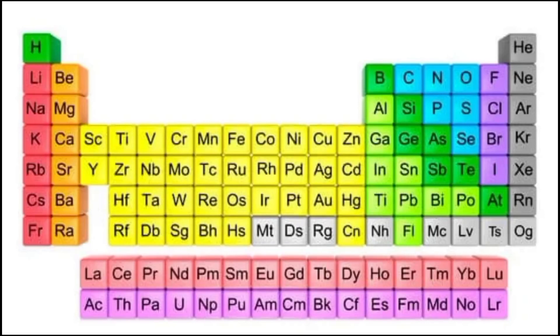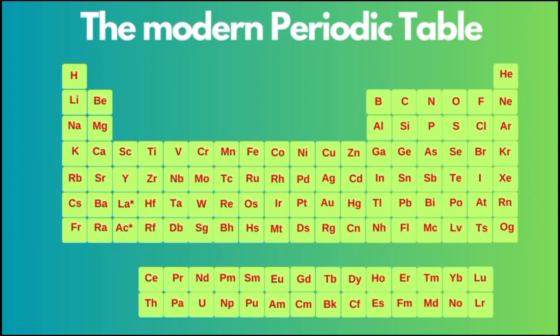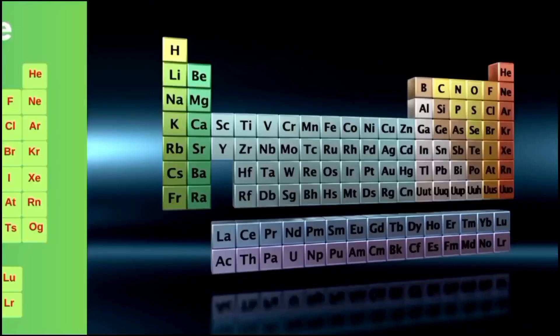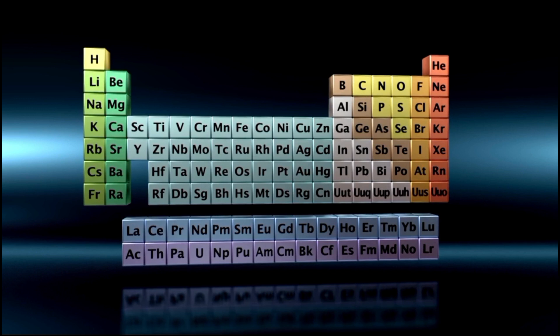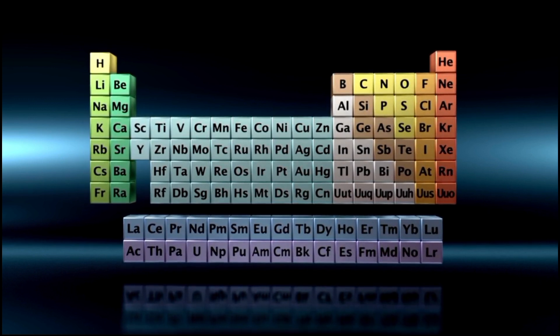The modern periodic table is a cornerstone of chemistry, offering a systematic arrangement of all known chemical elements based on their fundamental properties. This ingenious framework provides invaluable insights into the behavior and characteristics of elements, facilitating scientific understanding and breakthroughs. Its development was a gradual process culminating in the elegant table we know today.